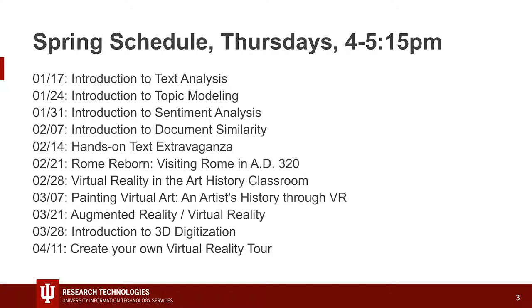By the time you get to something like topic modeling next week, where the math is super complicated and you're probably not going to be able to debug the math, you should know about some initial settings. You can think about what topic modeling is doing — are the results what you expected? If they're not, is it because something awesome has happened revealing something about the text, or is it because something in the pre-cleaning of the text has skewed your results?